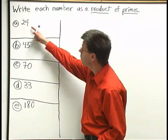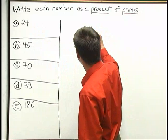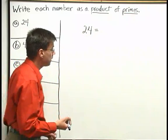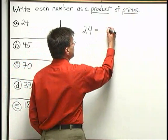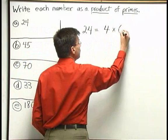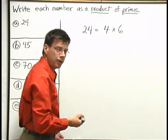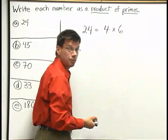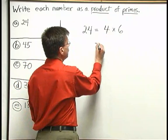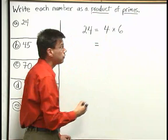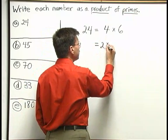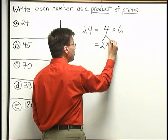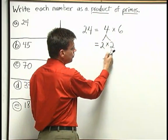Let's start with 24. I would like to break down 24 using multiplication. One way to break down 24 is as 4 times 6. Now what I want to do is continue breaking down both the 4 and the 6 using multiplication. I'll write equals below and break down that 4 into 2 times 2. I like to write 2 lines coming down from the 4 to show where the two 2's have come from.